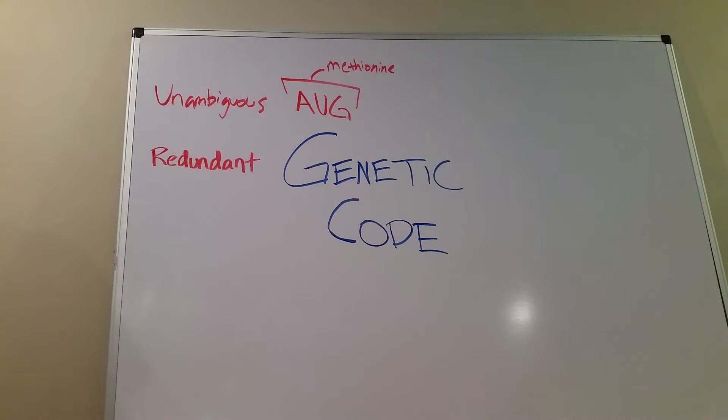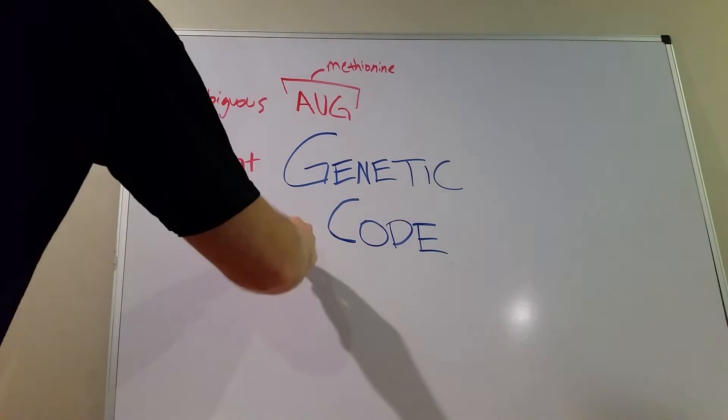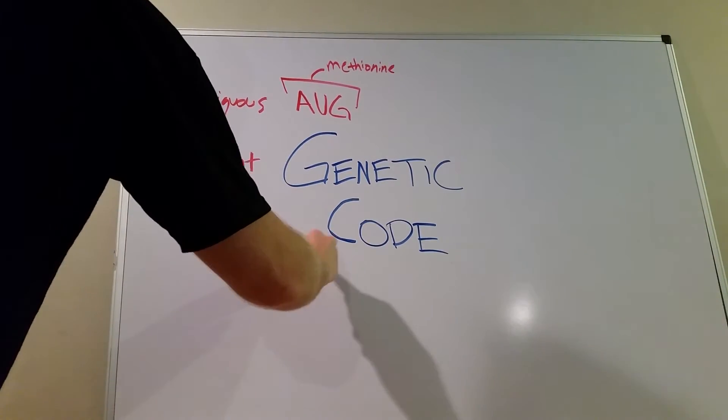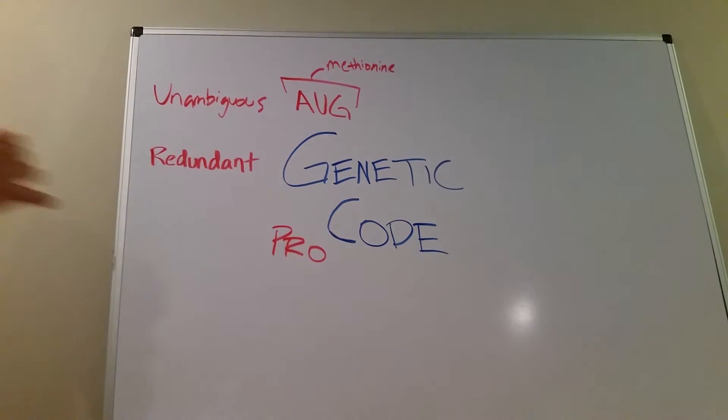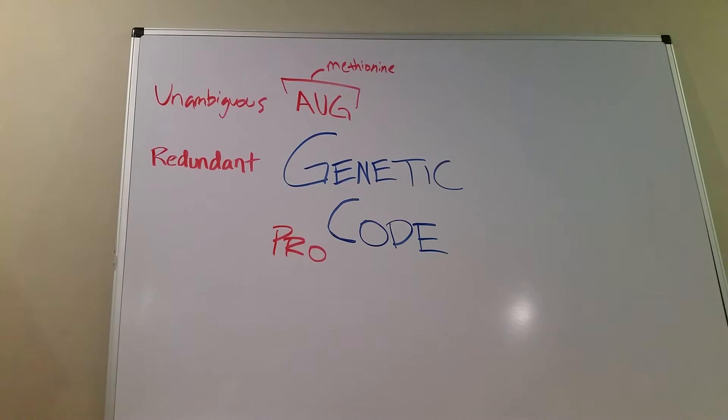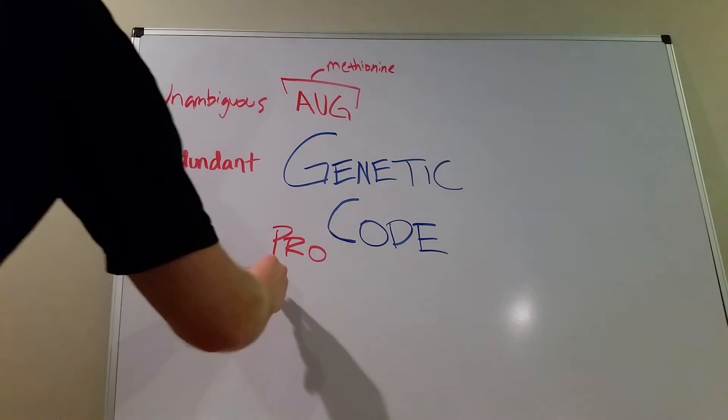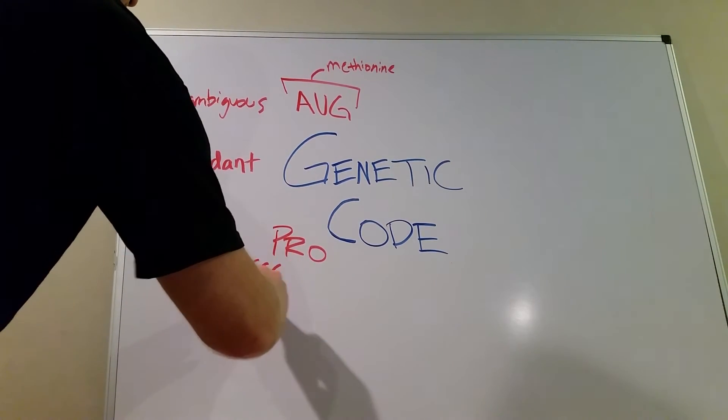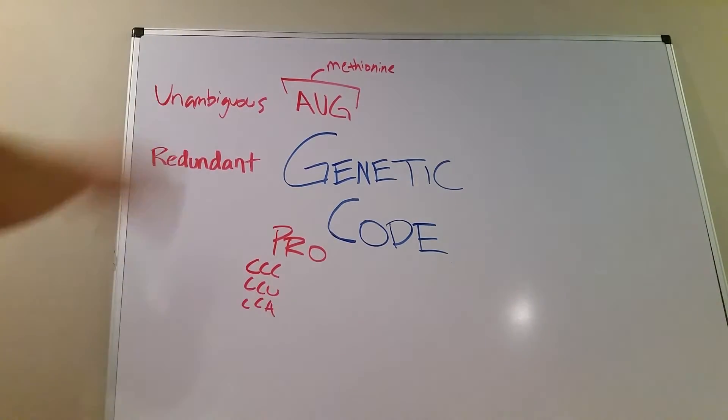Let's talk about what it means first before we talk about what the exceptions are. Let's talk about some sort of amino acid like proline, for example. And the thing about proline is that there's not one three letter codon that will code for proline. There are more than one way, there's more than one way to get a proline amino acid added to your chain. So like, for example, with proline you have like CCC, CCU, CCA, I forget all of them, there's like four or five of them there that can get proline.